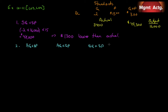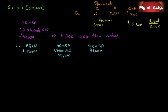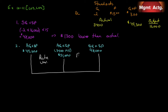We already have $49,300 for actual quantity × actual price, and $48,000 for standard quantity × standard price from requirement 1. We just need to calculate actual quantity × standard price: 3,400 actual hours × $15 standard price = $51,000. Now we're in a position to make our comparisons — this will be our rate variance, and this will be our efficiency variance.